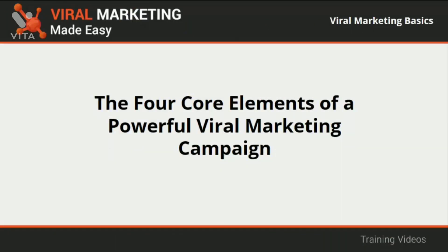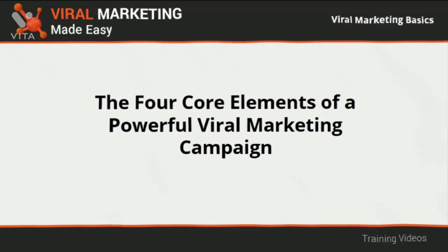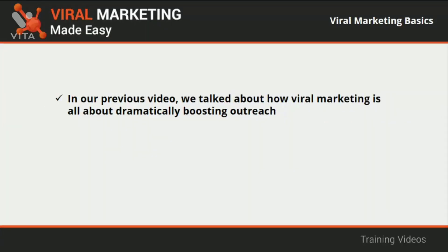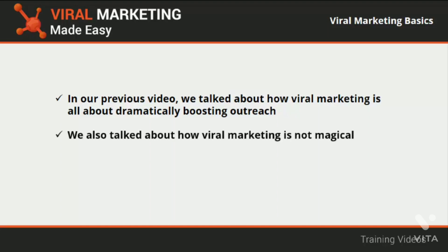The four core elements of a powerful viral marketing campaign. In our previous video we talked about how viral marketing is all about dramatically boosting outreach by making lots of people pump our content in all directions across many channels at the fastest rate possible — that is why it is called viral, because viral content spreads much like a computer virus, this time intentionally. We also talked about how viral marketing is not magical, and that a successfully run viral marketing campaign heavily depends on the actions put forward by the people involved.